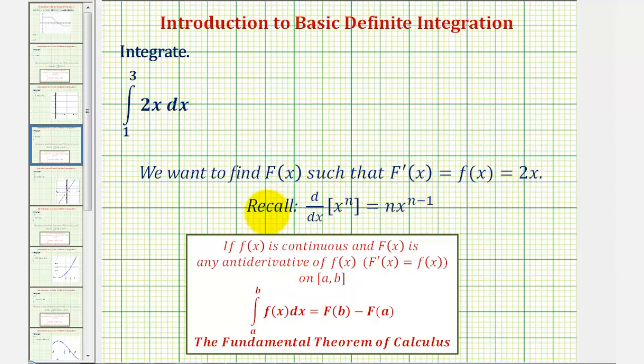Thinking about the power rule for a moment, notice how if we had x², the derivative would be 2x. So we'll use the antiderivative function x² to help us evaluate this definite integral. We could use x² plus a constant, but notice because of this subtraction, the constant would simplify out.